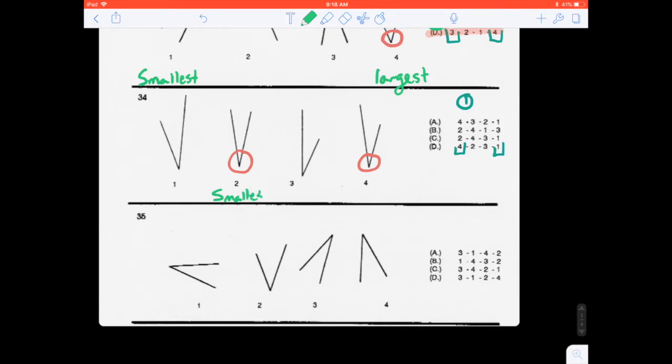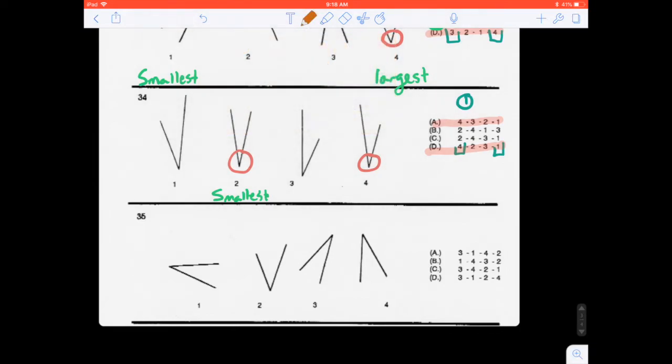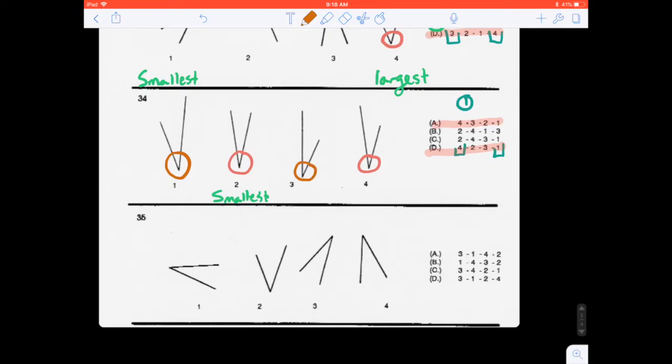Now, again, we can eliminate A and D. And now we're left with B and C. So now we just need to decide what is the largest angle. So coming back over here, we can, again, focus on our region one and three. And we can see, let's see, which angle is larger. I'm seeing less black on angle one. So we know angle one is our largest angle.